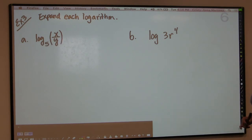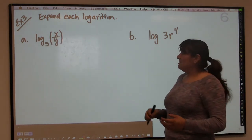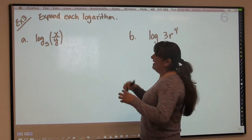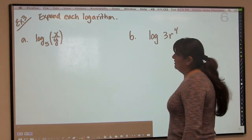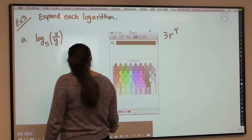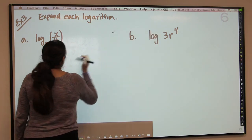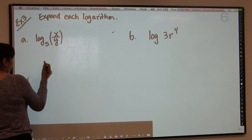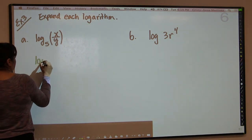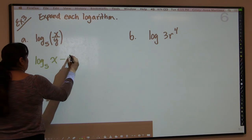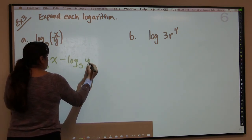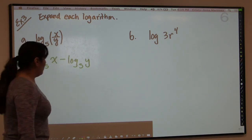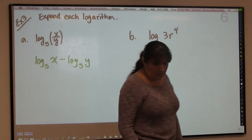Our last example is expanding logarithms — taking one logarithm and separating it into multiple logarithms. Because I have a division here, I'll use the quotient property to separate it into log base 5 of x minus log base 5 of y. The top goes first, the bottom goes second, and that's all you have to do for part A — it's not a very complicated one.